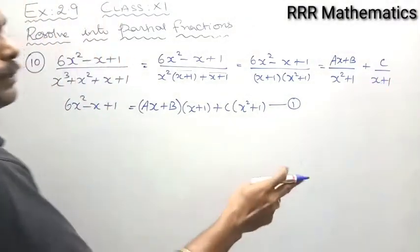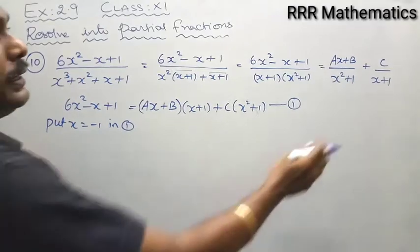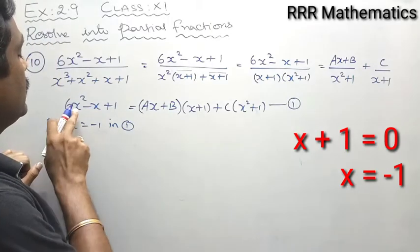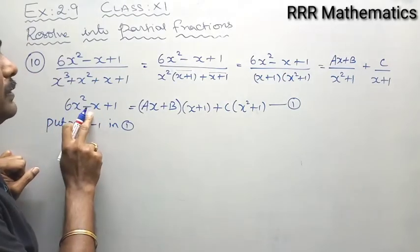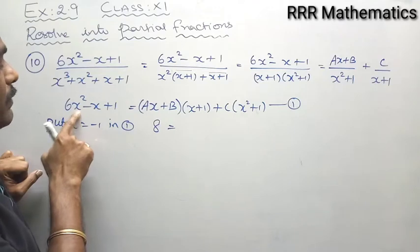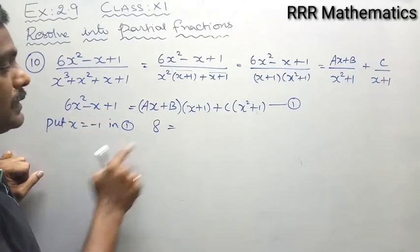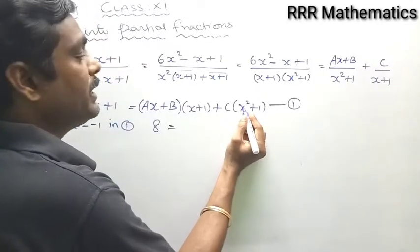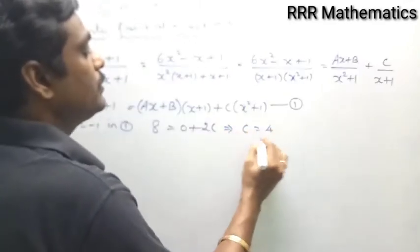To find c, equate the denominator factor (x+1) to zero, giving x = -1. Put x = -1 in equation 1. The left side: 6(-1)² - (-1) + 1 = 6 + 1 + 1 = 8. On the right side, (-1+1) = 0, so the (ax+b)(x+1) term becomes 0. For the c term: (-1)²+1 = 1+1 = 2, giving 2c = 8, so c = 4.